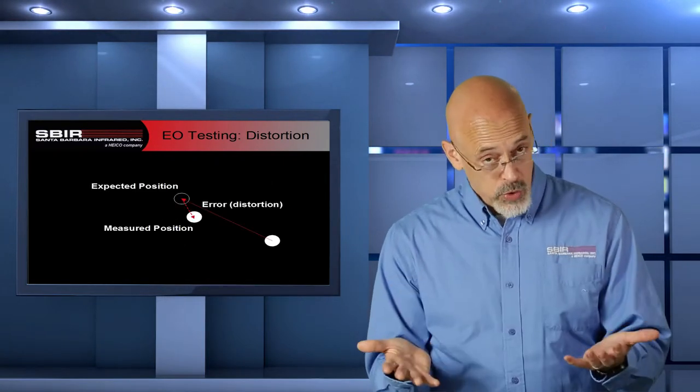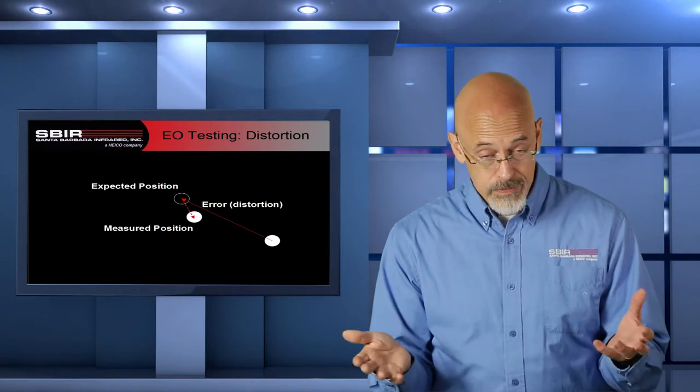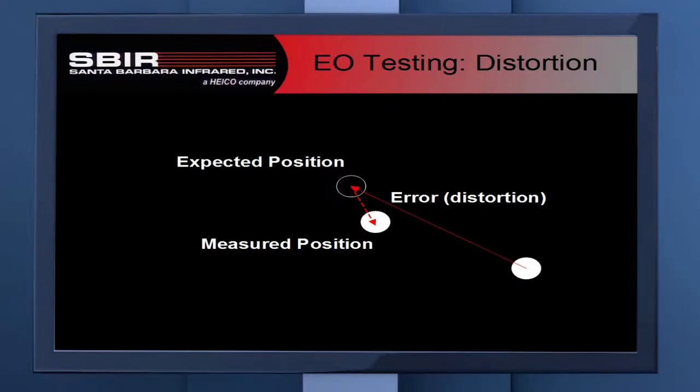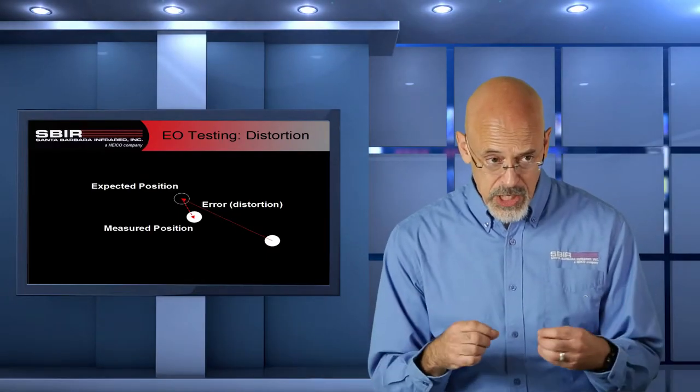We measure this test using our standard boresight measurement for a centroid of every one of those pinholes, and we compare the position that we've measured to where we expect it to be. That offset is the error that we're going to refer to. The error can be divided by the overall field of view to get a percentage.